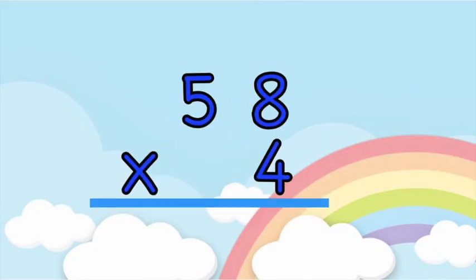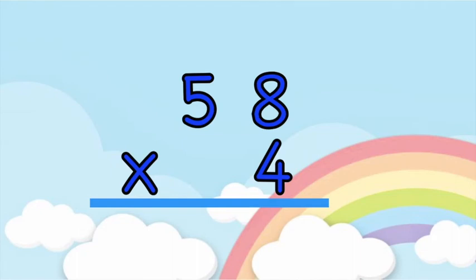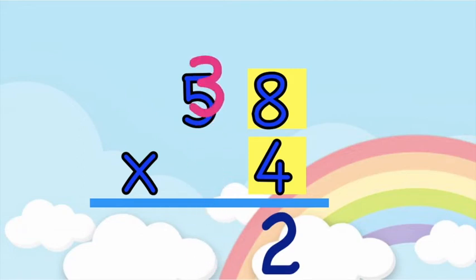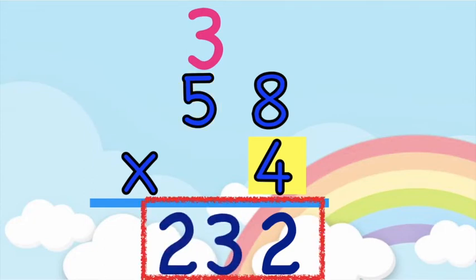How about if we have this one: 58 times 4. Let's solve it together. 4 times 8 — 4, 8, 12, 16, 20, 24, 28, 32. So we have 32. Write 2 at the bottom, carry 3 at the top of 5. Then multiply the tens: 4 times 5 — 4, 8, 12, 16, 20, plus 3 — good job children, that is 23. So we have 232.